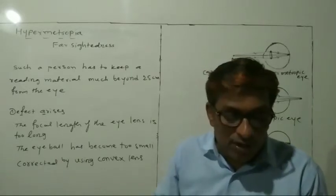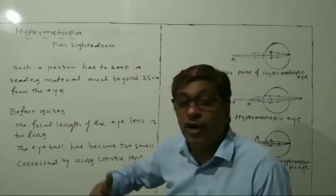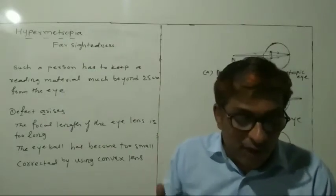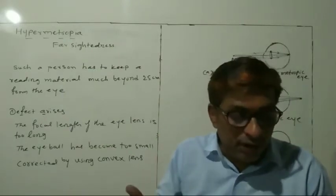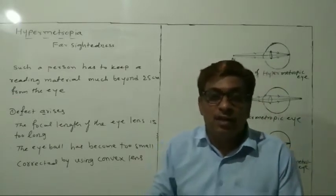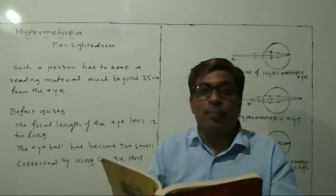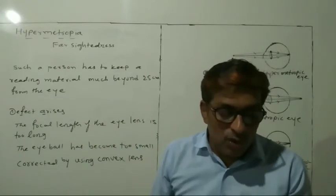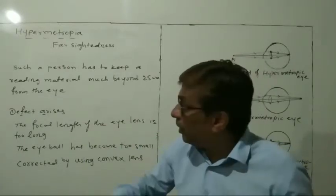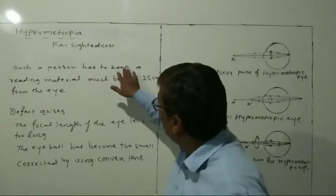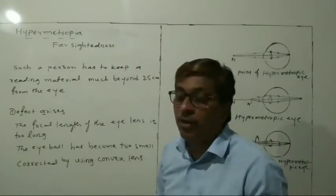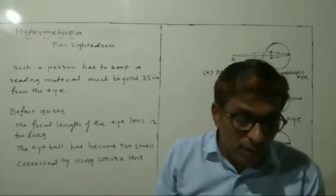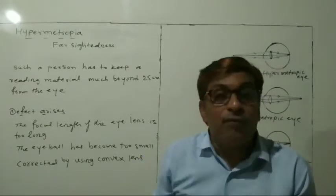So what happens? The near point for the person becomes far. The near point is farther away from the normal near point of 25 centimeters. Such a person has to keep a reading material much beyond 25 centimeters from the eye for comfortable reading.